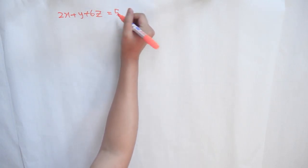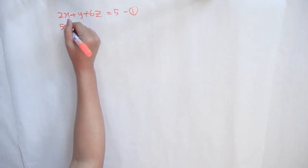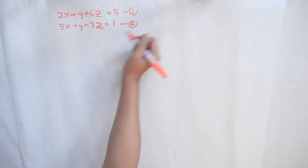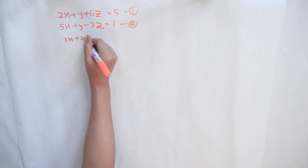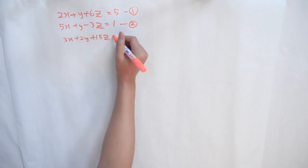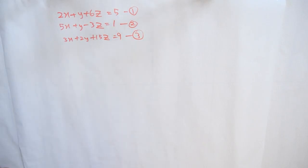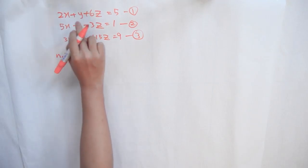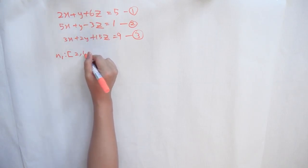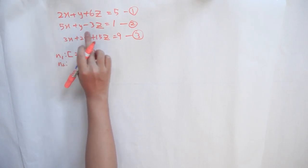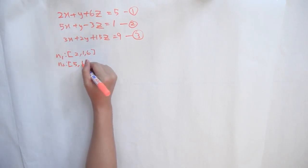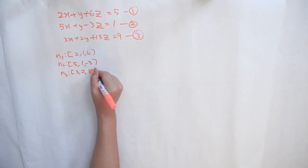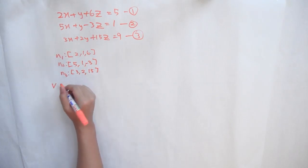Now we do a question asking us to describe each system of planes and, if possible, solve the system. Equation 1: 2x plus y plus 6z equals 5. Equation 2: 5x plus y minus 3z equals 1. Equation 3: 3x plus 4y plus 15z equals 9. We find the normals: n1 equals bracket 2, 1, 6; n2 equals bracket 5, 1, negative 3; and n3 equals bracket 3, 2, 15.